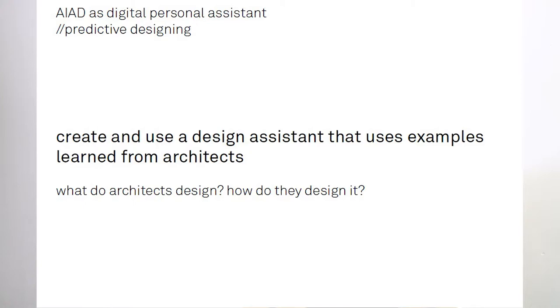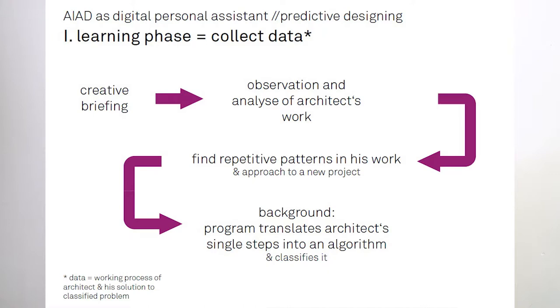And I want to use that kind of logic to create a design system that uses examples which it learned from architects before. So the question is, what do architects design and how do they design it? That means, at the first phase of the algorithm intelligence aided design program, we have a creative briefing. And then the program observes and analyzes the architect's work in the background to find repetitive patterns in his work and his approaches to a new project. And in the background it translates all the moves to algorithms with single steps which can be classified. So the data is the working process of the architect.